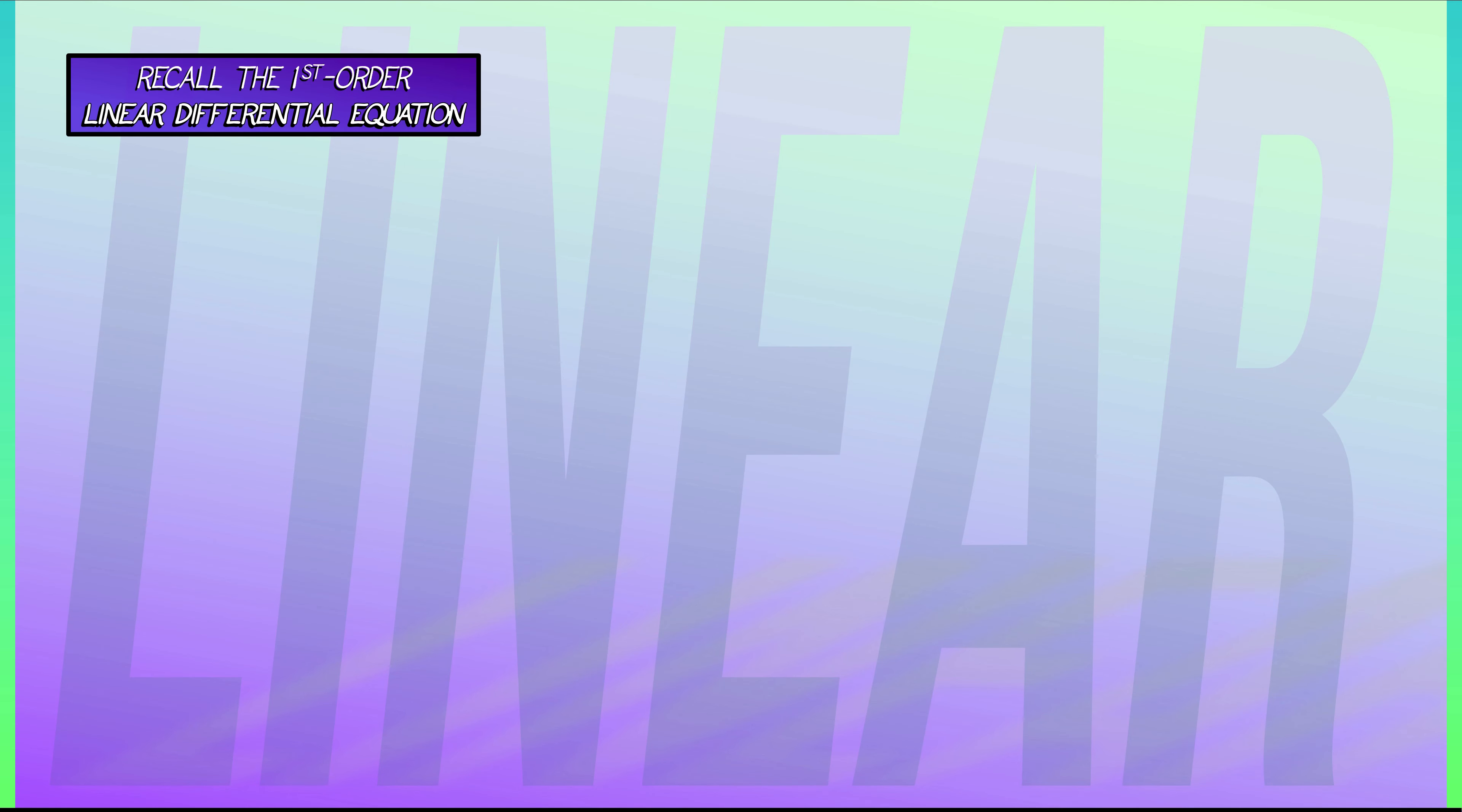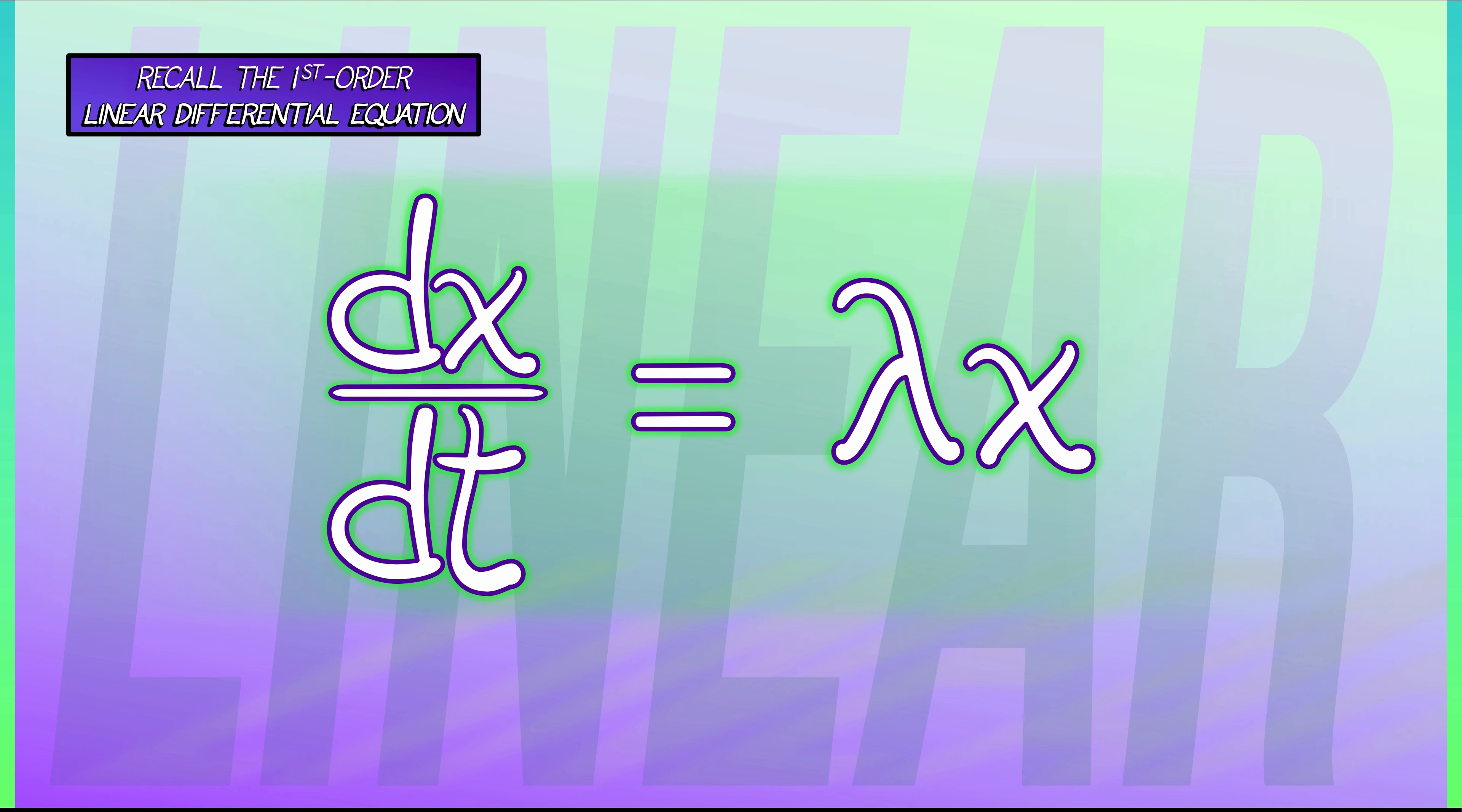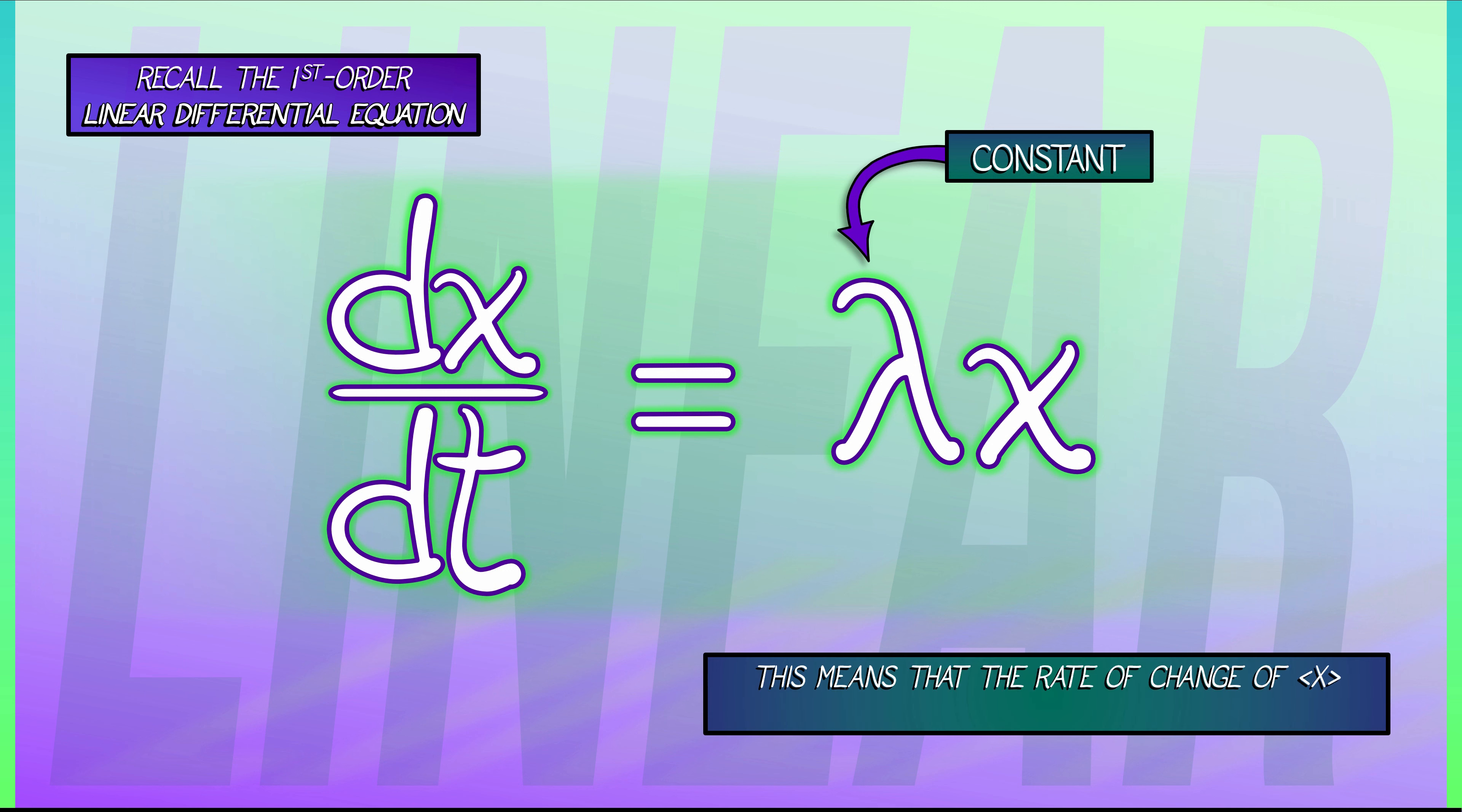Recall the first-order linear differential equation that we covered in the last chapter. This is given by dx/dt equals lambda times x. Here, lambda is a constant. We know what the equation is, we know its solution. What does it mean? It means that the rate of change of x, the amount of x that you've got, is proportional to the amount of x that there is.